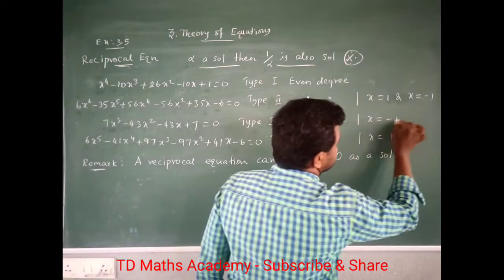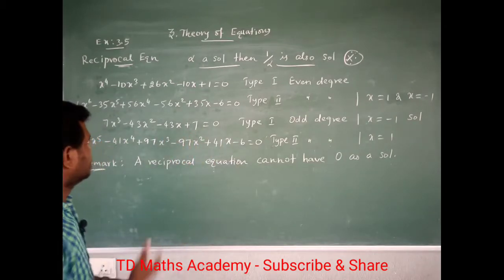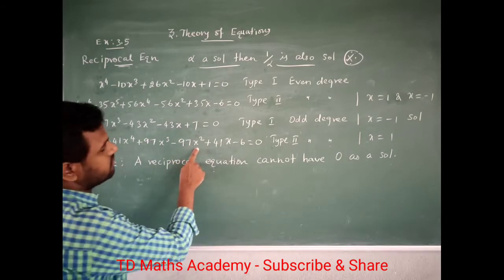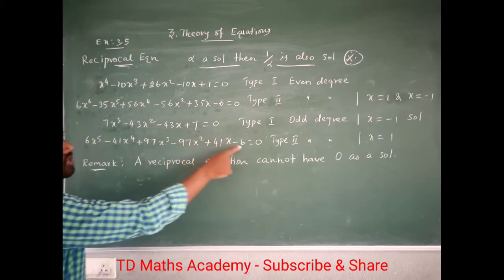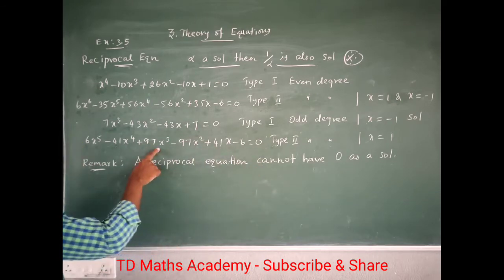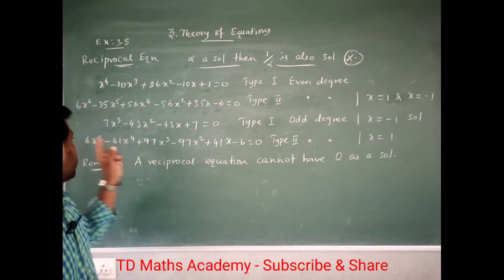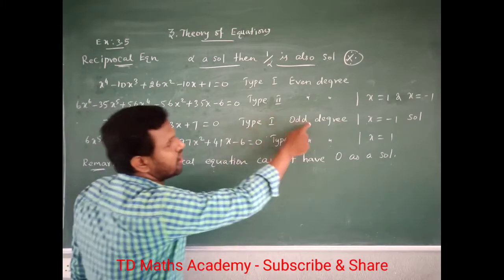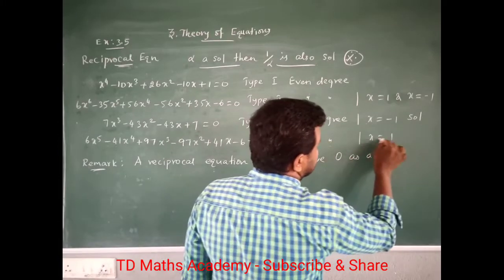So x equal to minus 1 is a solution for Type 1 odd degree. For Type 2 odd degree, substitute x equal to plus 1: plus 6 minus 6 cancel, minus 41 plus 41 cancel, plus 97 minus 97 cancel — result is 0. So for Type 2 odd degree, x equal to plus 1 is a solution. To summarize: Type 1 odd degree → x = minus 1 is a solution; Type 2 odd degree → x = 1 is a solution.